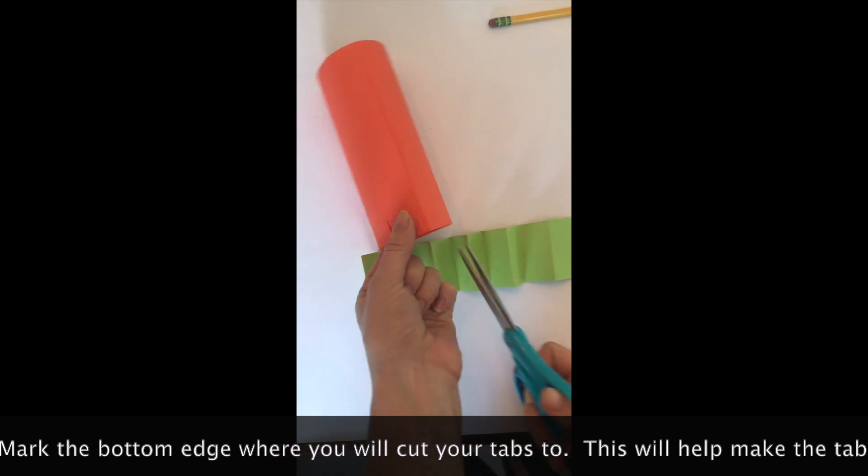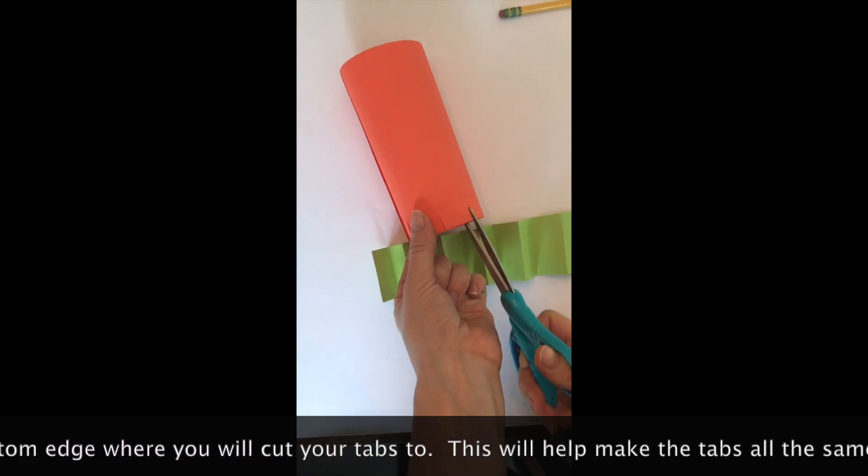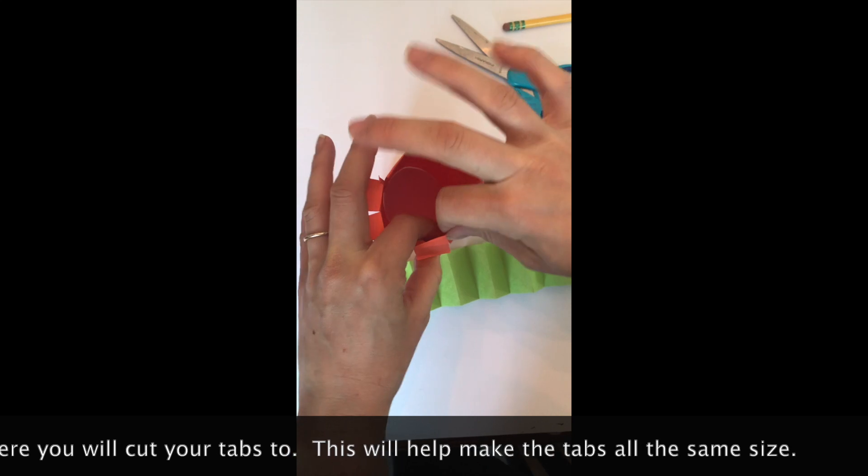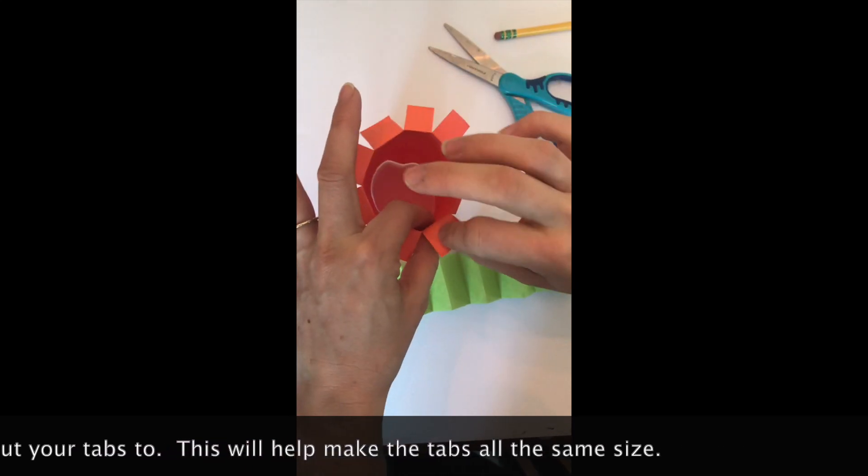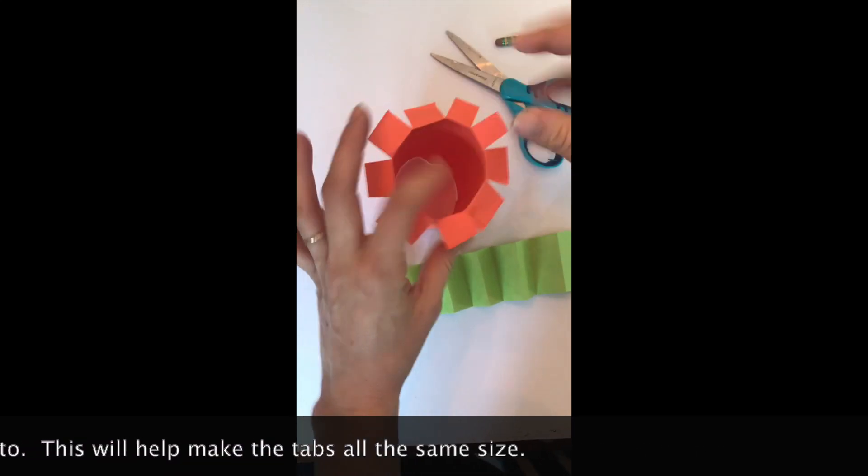Then all I need to do is fold out the tabs and I have a strong base for my cylinder to be glued down. Remember your tabs should be about as wide as your finger.